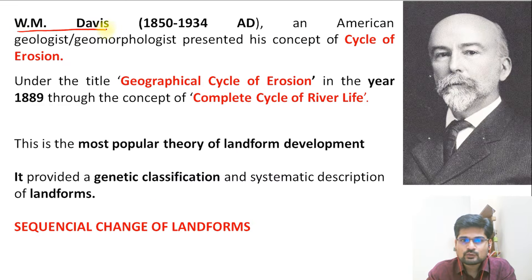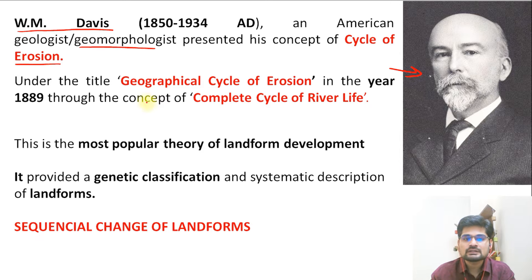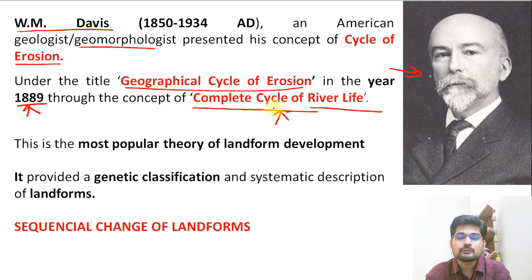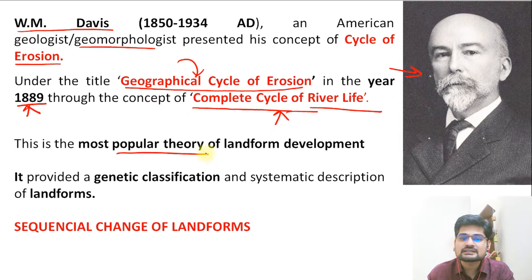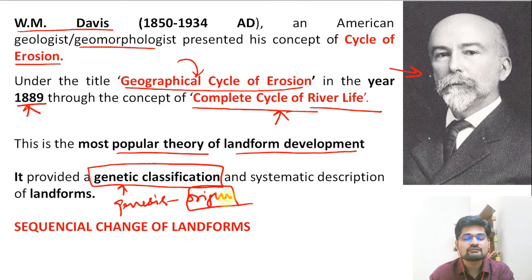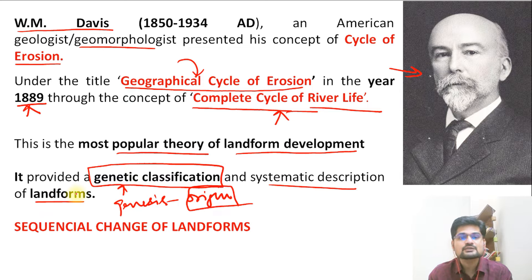W.M. Davis was an American geologist and geomorphologist who presented his concept of cycle of erosion. The title of his work was 'Geographical Cycle of Erosion' in the year 1889, and this concept was given in his article called 'Complete Cycle of River Life.' This is one of the most popular theories of landform development in geomorphology, and it provided a genetic classification — meaning it is about genesis, that is, the origin of landforms.